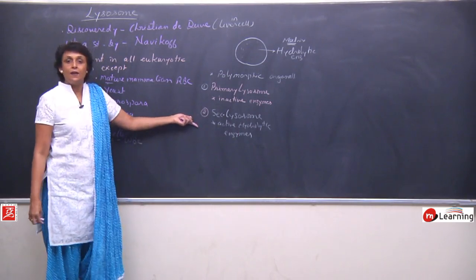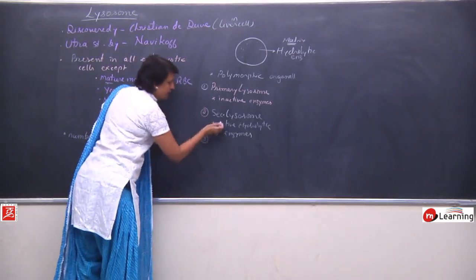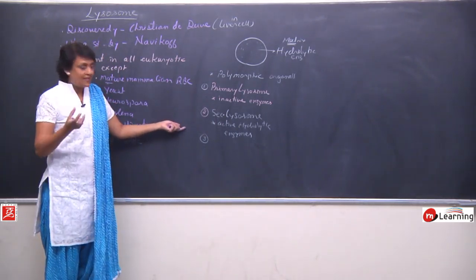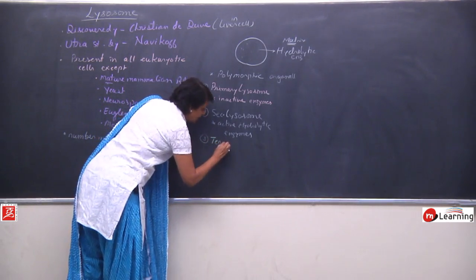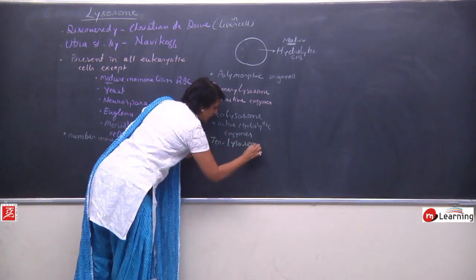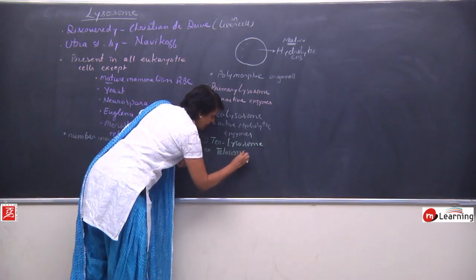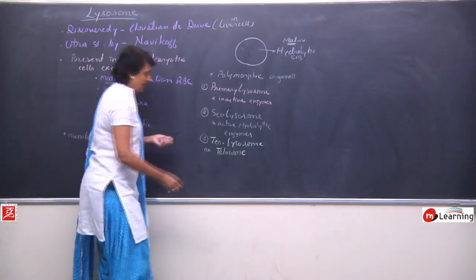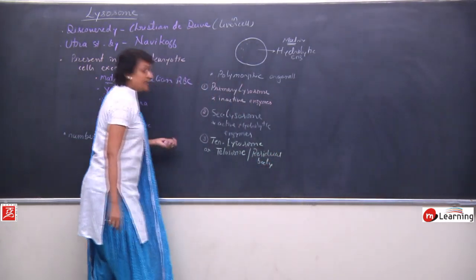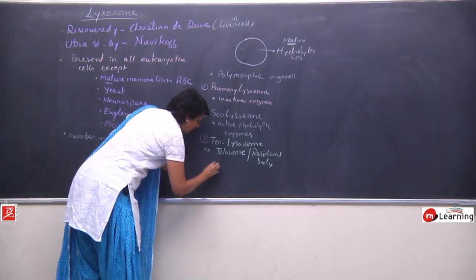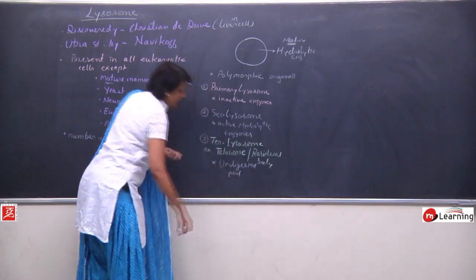This is the stage when secondary lysosomes help in breaking down of food, digesting the food, or destroying pathogens. After the digestive process is done, what remains in the lysosome is undigested food — a residual body. That lysosome is now known as a tertiary lysosome, also called telosome or residual body. It has only undigested food remaining inside, which is to be thrown out.